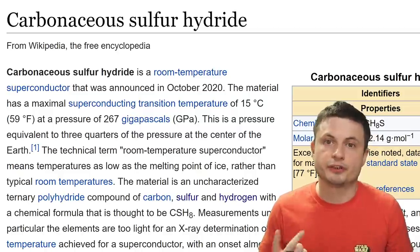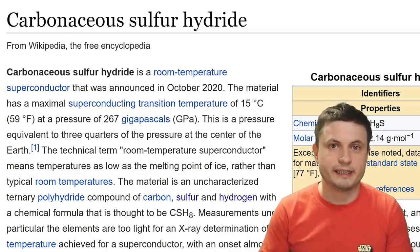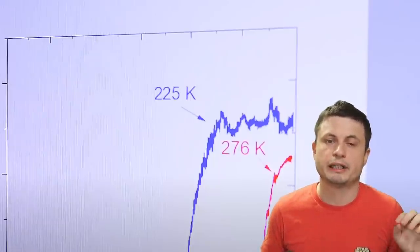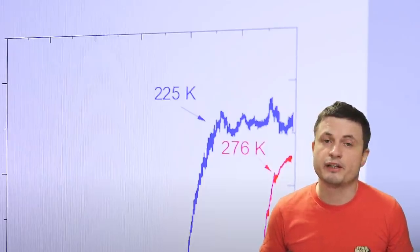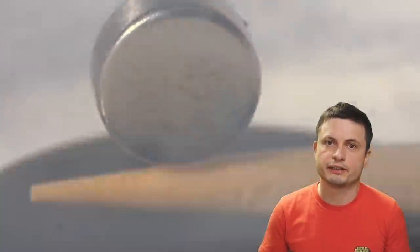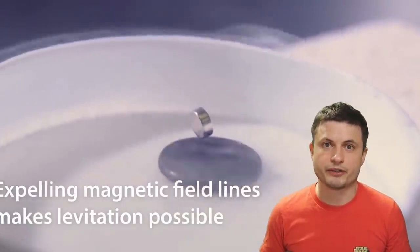And the material they use for this is known as carbonaceous sulfur hydride. In other words it's carbon, sulfur and hydrogen all mixed into one component with the formula CH8S. And it just so happens that once you give this enough pressure at temperatures of around 15 degrees Celsius the material becomes superconductive, exhibiting all of the properties that a typical superconductor would have as well.